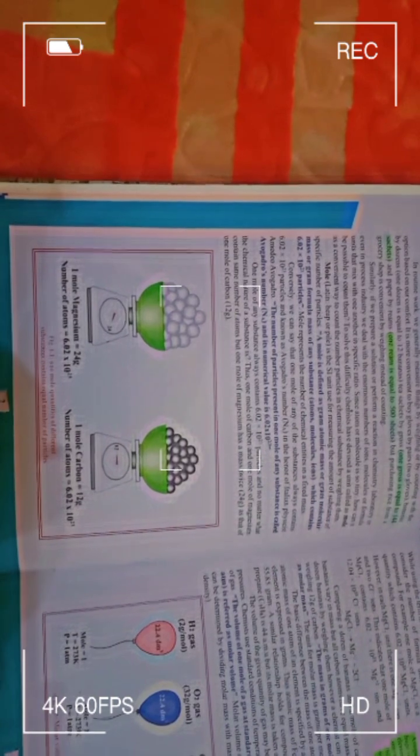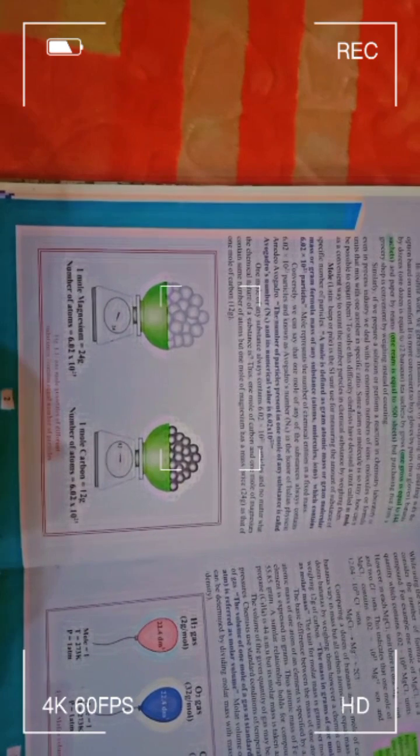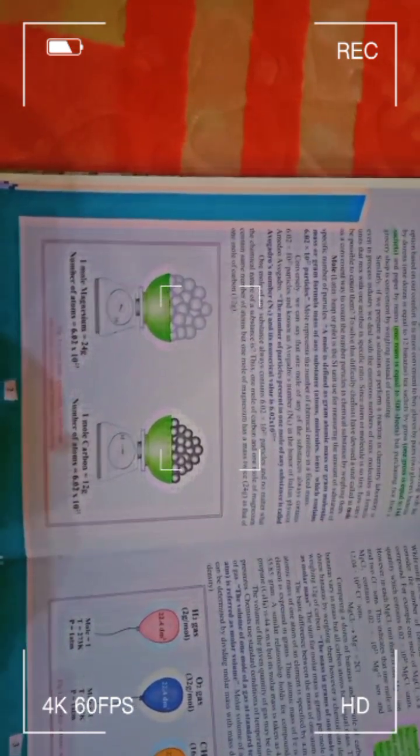Now, here we have an example of carbon and magnesium. Carbon's mass is 12 grams and magnesium's mass is 24 grams for a single mole. The number of atoms present in one mole is 6.02 times 10 to the 23. If the mole is double, then the number of atoms and particles will double.